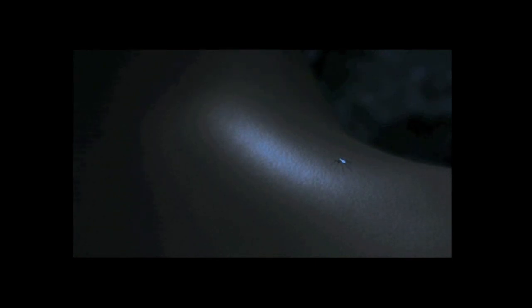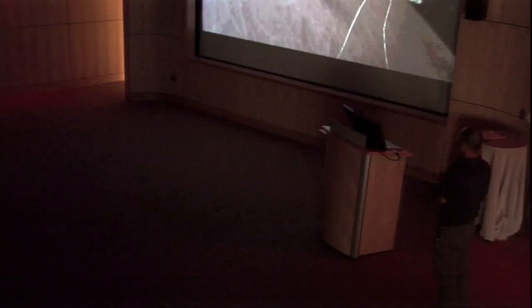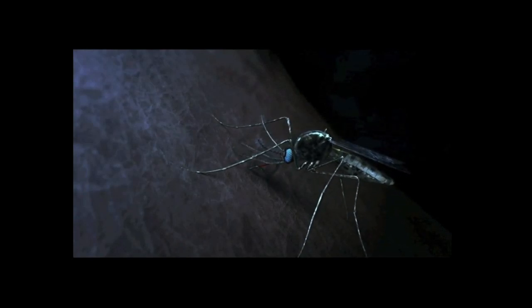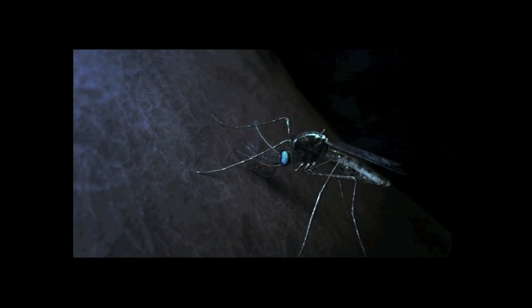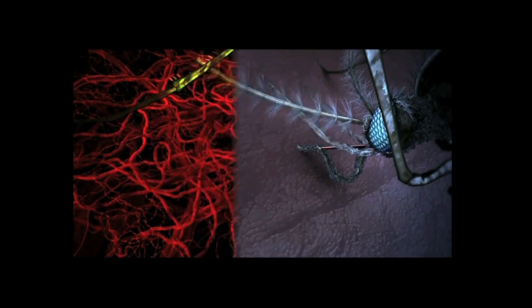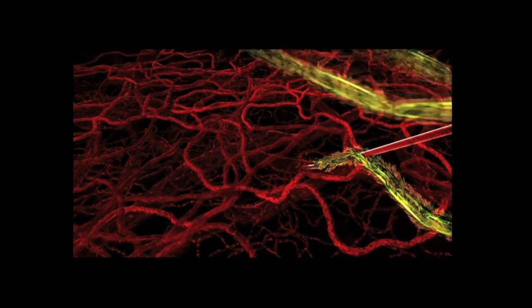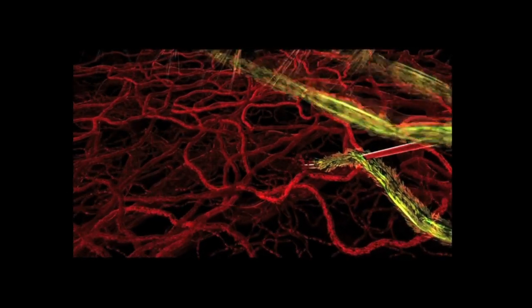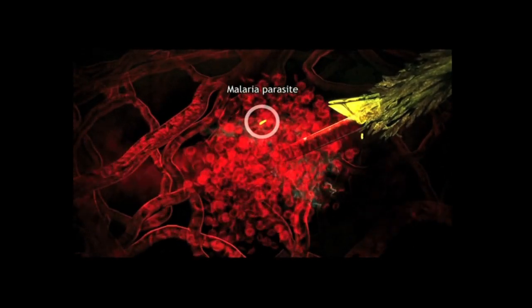The malaria parasite is an ancient organism. It has been with us since before we were human. Famous victims include Alexander the Great, Genghis Khan and George Washington. The malaria life cycle follows a devious path, swapping back and forth between mosquitoes and humans. This mosquito is infected with malaria parasite. Because she is pregnant, she has become hungry for human blood. During the bite, she injects saliva to stop the blood from clotting. Her infected saliva also carries the malaria parasite.